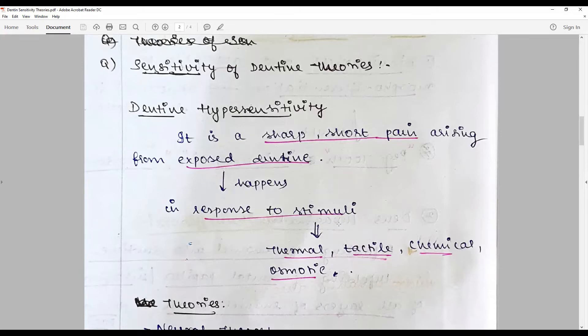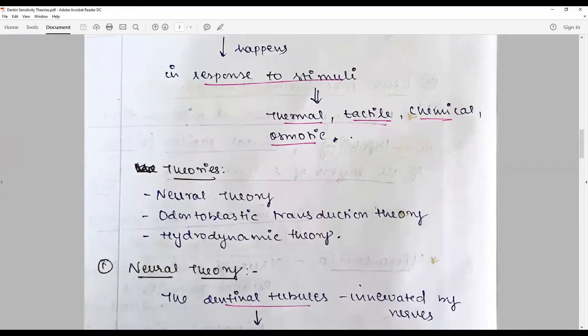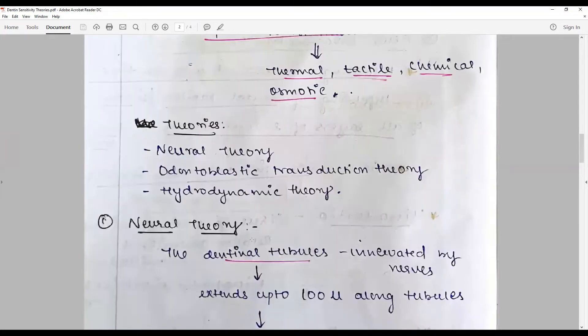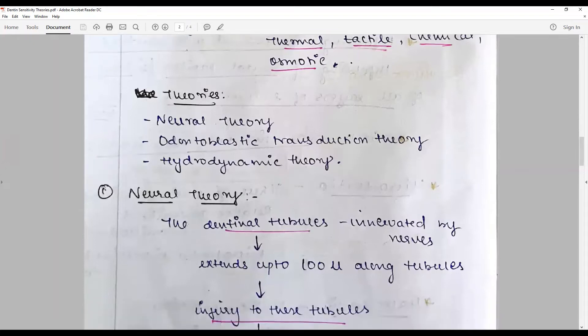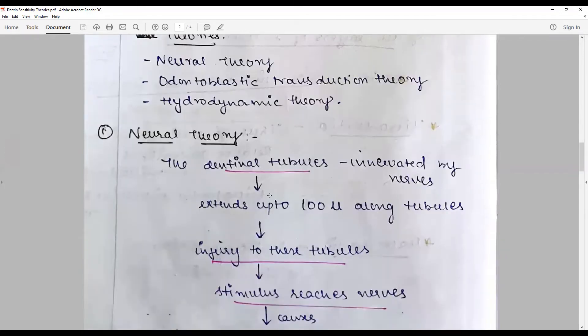This is explained by three theories: the direct neural theory, the odontoblastic transduction theory, and the hydrodynamic theory. The neural theory states that the dentinal tubules are directly innervated by the nerves and extend up to 100 micrometers along the tubules.